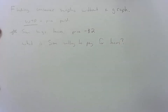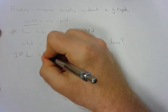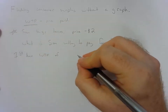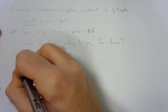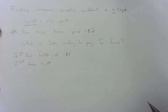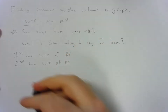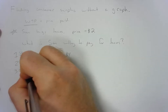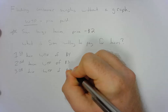If we're familiar with demand curves, we know that the first taco is going to have the highest willingness to pay. Let's say the first taco has a willingness to pay of $4. For the second taco, willingness to pay is a lower value — let's say $3. And the third taco has a willingness to pay of $2.